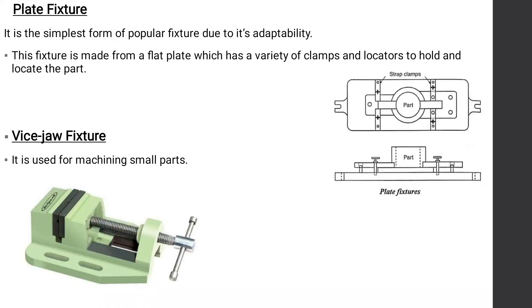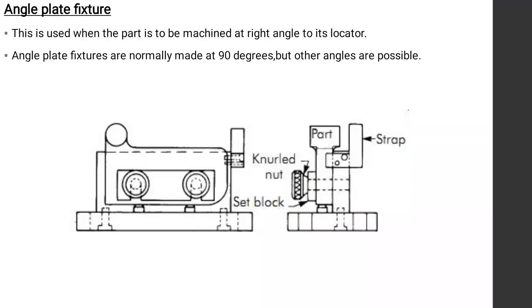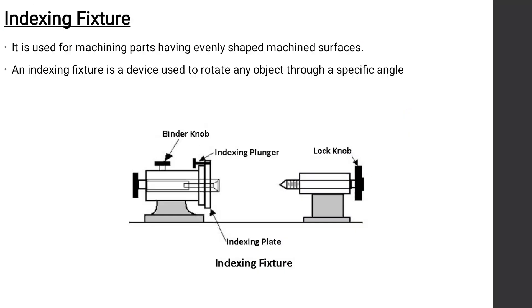Now, angle plate fixture — what is an angle plate fixture? It is used when the part is to be machined at a right angle to its locating surface. Angle plate fixtures are normally made at 90 degrees, but other angles are also possible.